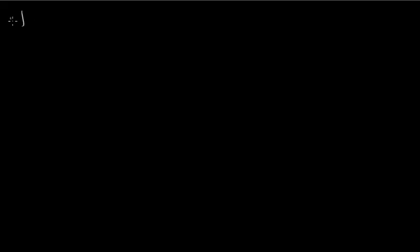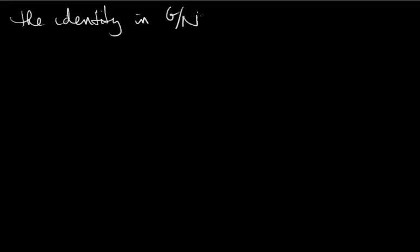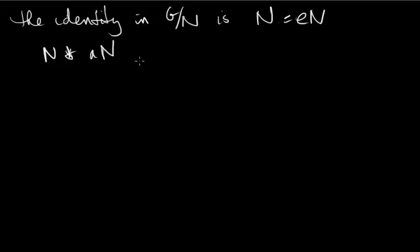We need an identity element, and clearly the identity in G mod N is N, or you could think of it as EN. Because EN star AN, where AN is any other coset in the factor group, equals EAN, which is AN. So we have the identity.